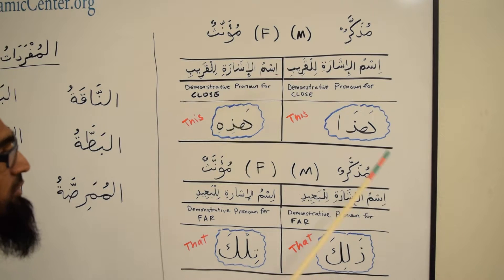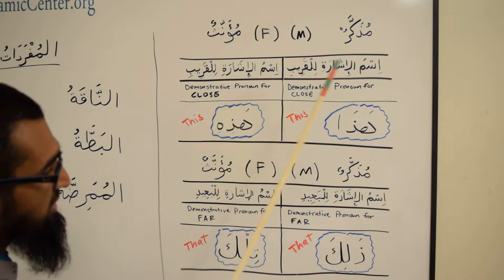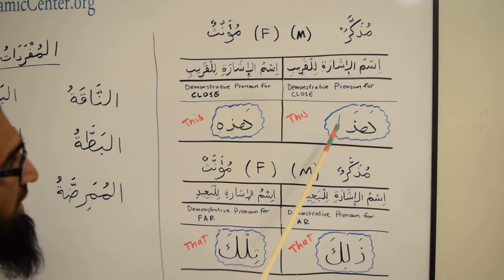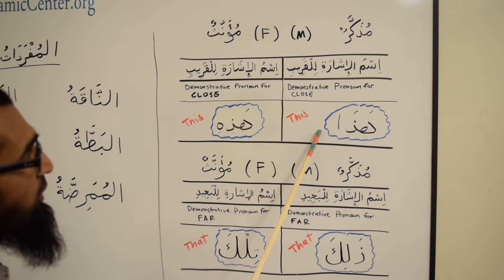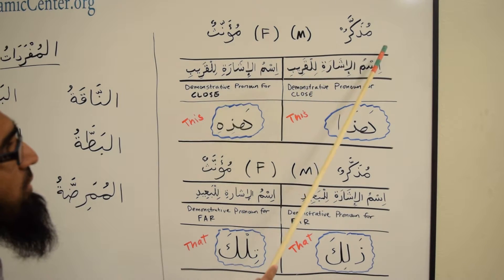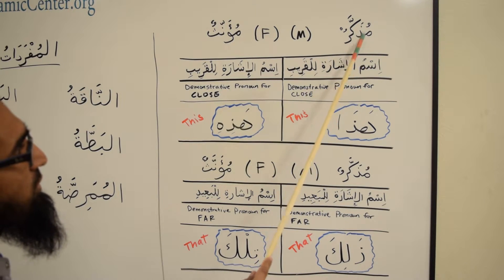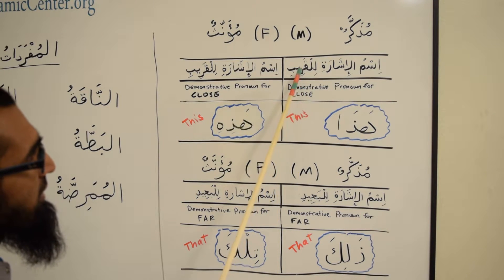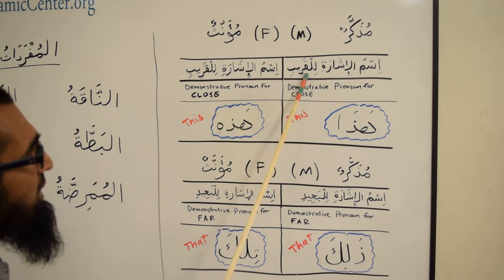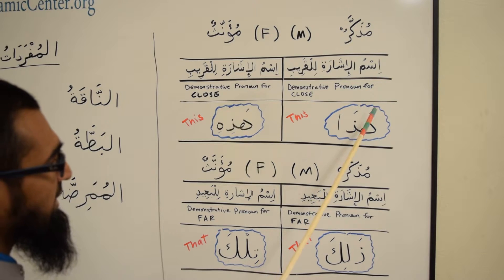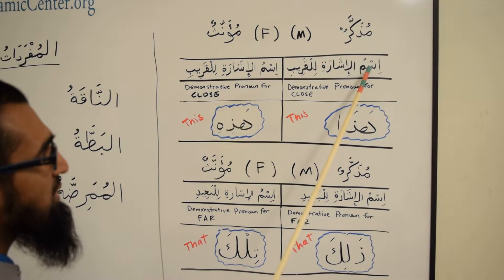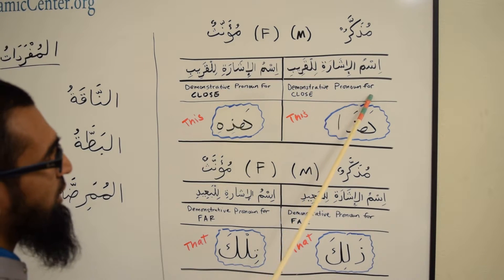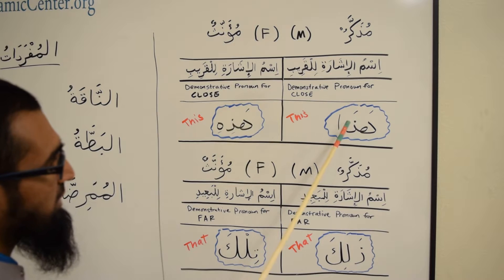We already learned Hadha, which means 'this,' and Thalika, which means 'that.' Hadha is used for the masculine — Mudhakkar — and it is used for Al-Qarib, meaning close. So the technical term is Ismulisharati lilqarib, the demonstrative pronoun for something that is close.